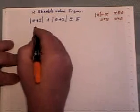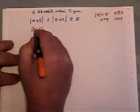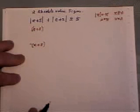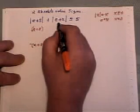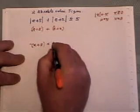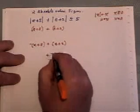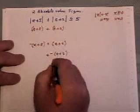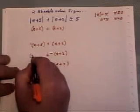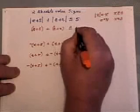Now the absolute value of e plus 5 could be e plus 5, or it could be the opposite of e plus 5. The absolute value of e plus 2, well it could be e plus 2 and that e plus 2 could be with either one of these. Or it could be the opposite of e plus 2, and it could then be that with either one of these. So you end up with four equations.